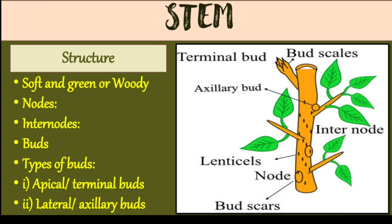The gap between two nodes is called an internode. Buds are structures that develop into branches, leaves, or flowers. There are two types of buds: apical or terminal buds, present at the tip of the stem; and lateral or axillary buds, which are usually present at the nodes.